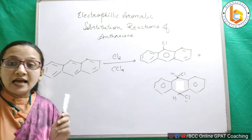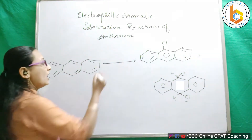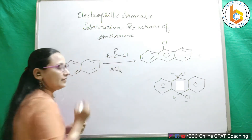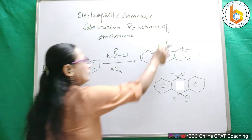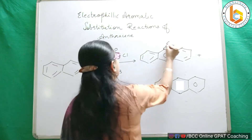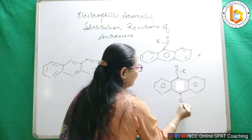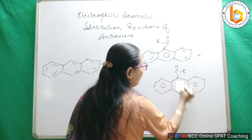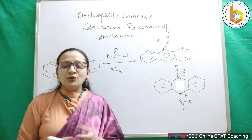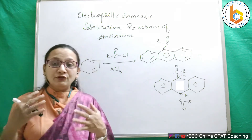The third reaction is acylation — Friedel-Crafts acylation. Using RCOCl with AlCl₃, I would get the same type of products: substitution at position 9 giving a ketone (C=O·R at position 9), or addition at positions 9 and 10 where both carbons bear a C=O·R group and the hydrogens are retained. There is nothing new to understand conceptually, since we already know these reactions.